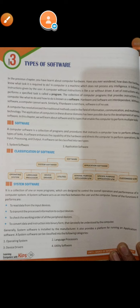Hello students, today I am going to explain to you your third chapter: types of software. Before going to explain this, I want to explain to you what is software. The information that you display on your computer screen that is in readable format is called software.